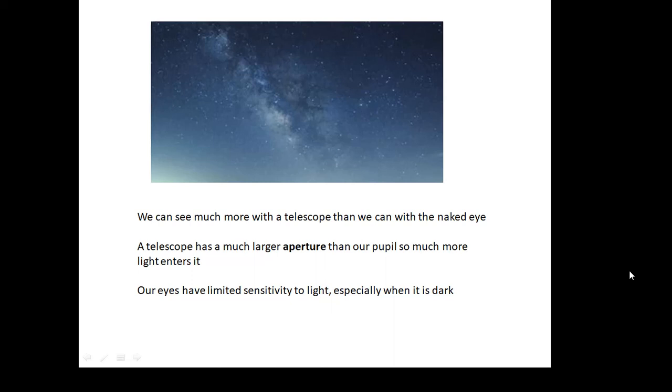A telescope has a much larger aperture. The aperture is basically the hole that the light comes through. Without the telescope, you're talking about the pupil of your eye, which isn't very big compared to the aperture of a decent sized telescope. Also, our eyes have limited sensitivity to light, especially when it's dark. On your retina, there's things called rods and cones, and only the rods work at low light levels. So our eyes aren't very sensitive in low light intensities. So we need to collect as much light as possible, and then we can see very dim, far away objects.